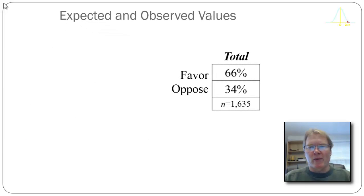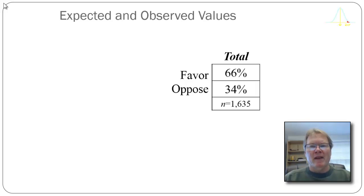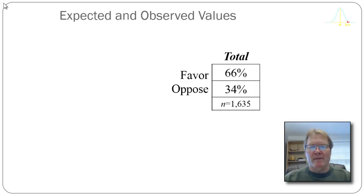I'm returning to the General Social Survey, a large national survey I use for these example videos. We're going to look at how people feel about capital punishment. Looking at the marginal distribution in 2012, we find that 66% of respondents favor capital punishment for people convicted of a capital crime, and 34% oppose it.